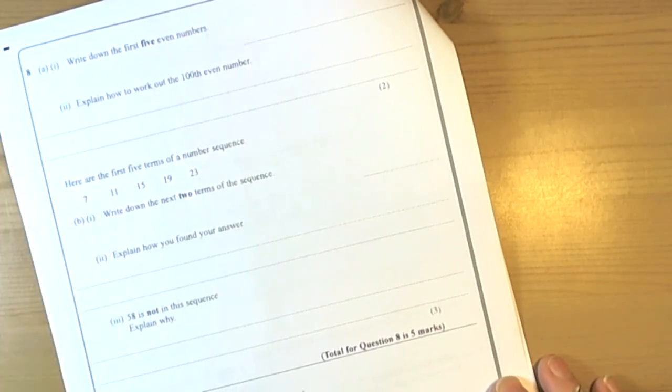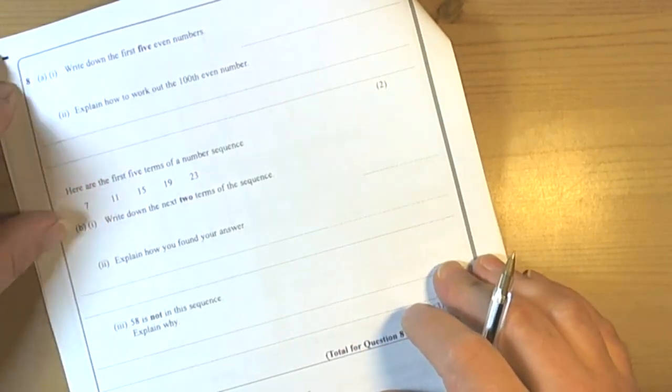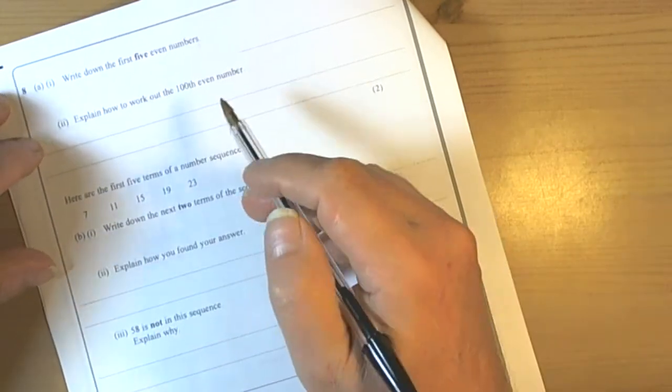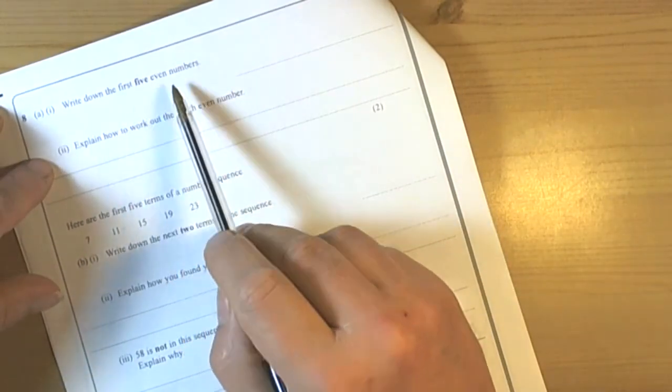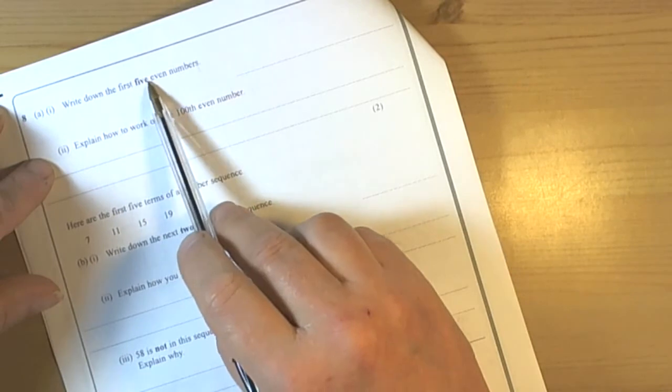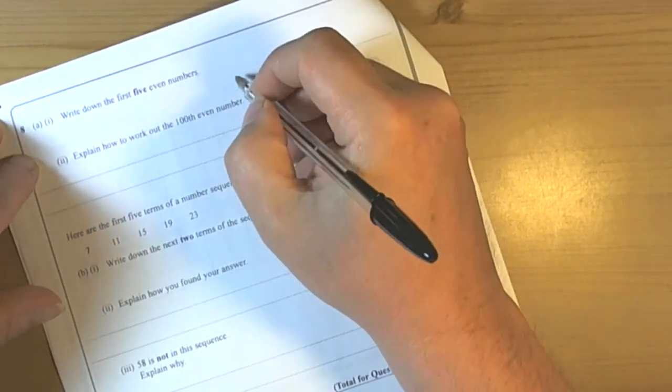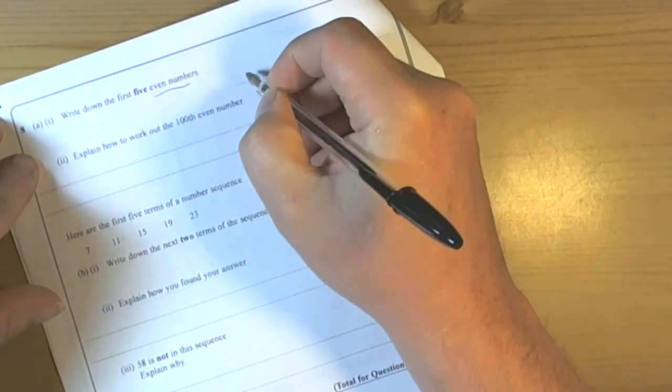So patterns and sequences, quite a common question in the exam. So we've got to know some special numbers and patterns. Let's have a look. Write down the first five even numbers. Well the even numbers are to do with the two times table.